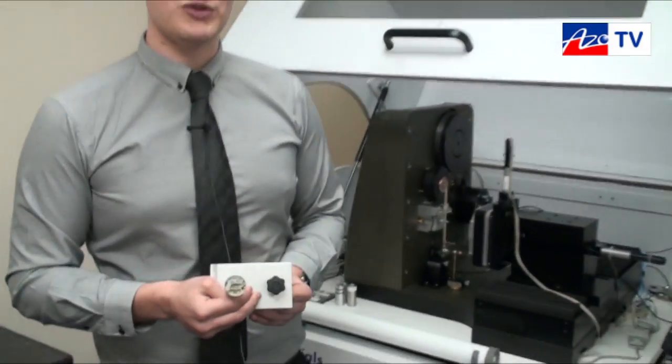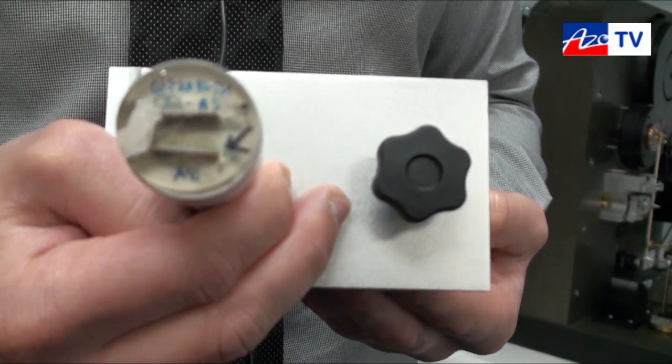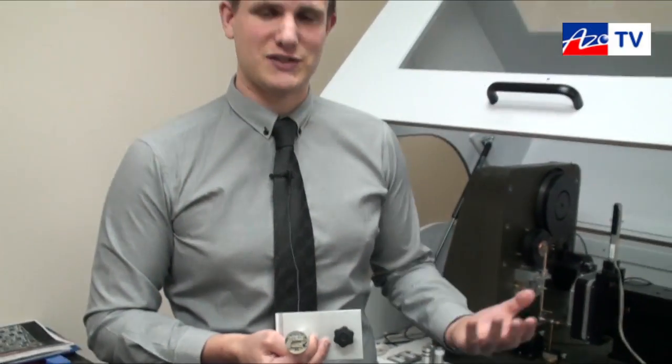This is the kind of sample that we typically work with. This is a cross-section of a solder on a copper sample. What we want to do is look at the properties of the inter-metallic layer in the cross-section.